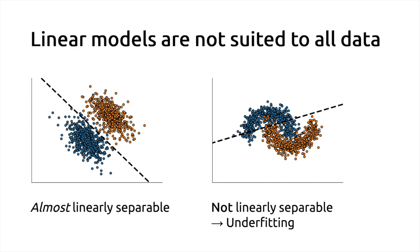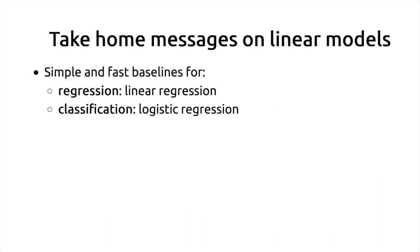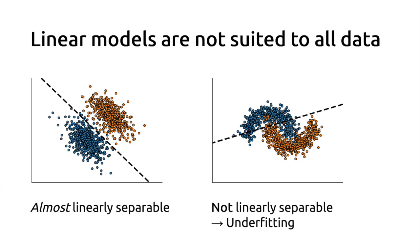When we face non-linearly separable data, one strategy is to engineer new features. Instead of the original two input features, we might find an additional feature in which the two groups become linearly separable. This new feature could be an entirely new measurement or a transformation of the original features. The strategy of devising new features to make the problem easier is called feature engineering, and we will give concrete examples in the notebooks.